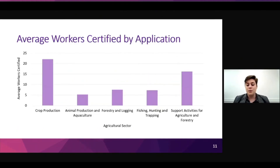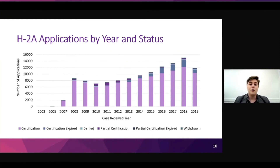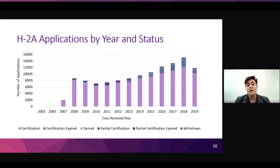The number of H-2A workers each year changes based on politics, because the current administration each year sets limits on visas. As you can see in the chart, most applications are certified, with partial certifications being common until about 2014. We plan to investigate characteristics of denied applications in the future — there might be a link between companies investigated for labor violations and companies denied H-2A certifications. In the past five years, withdrawn applications have become more common, so we might investigate the characteristics of those applications as well.